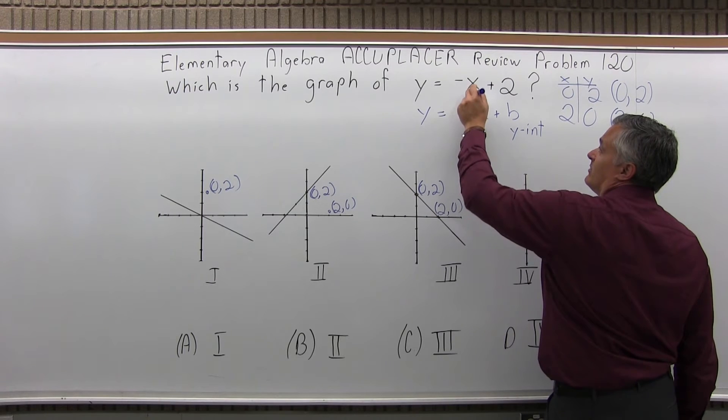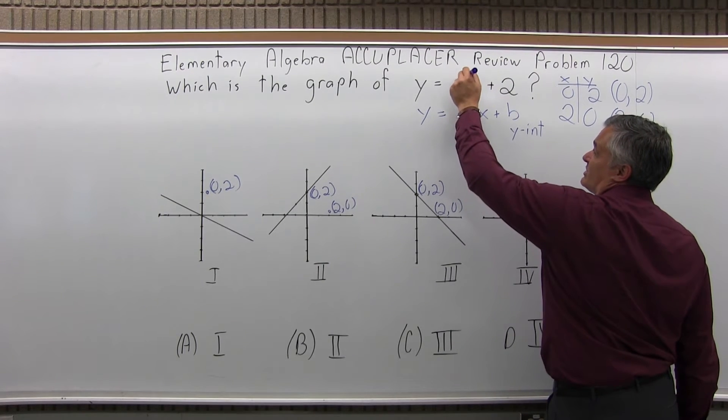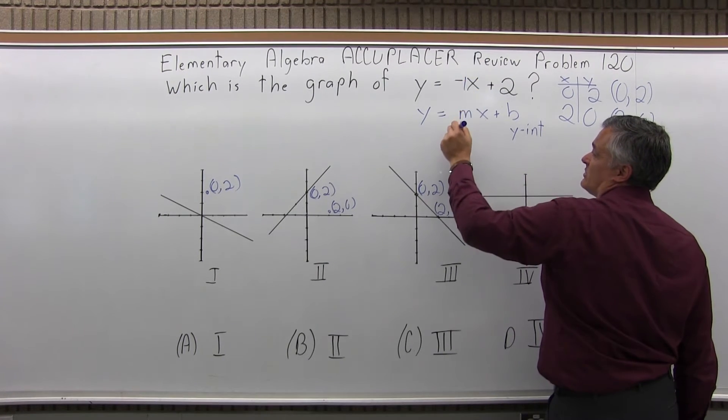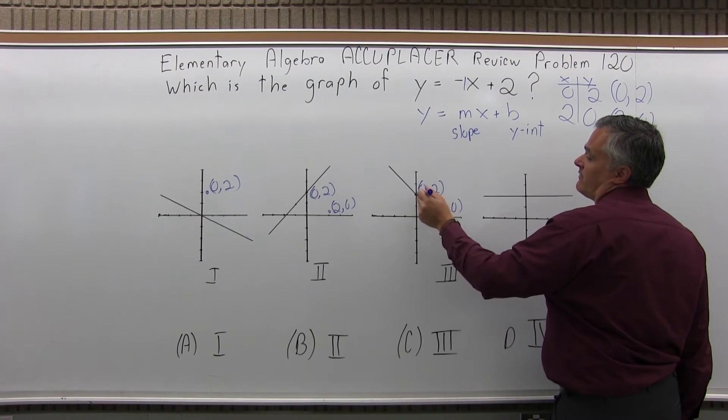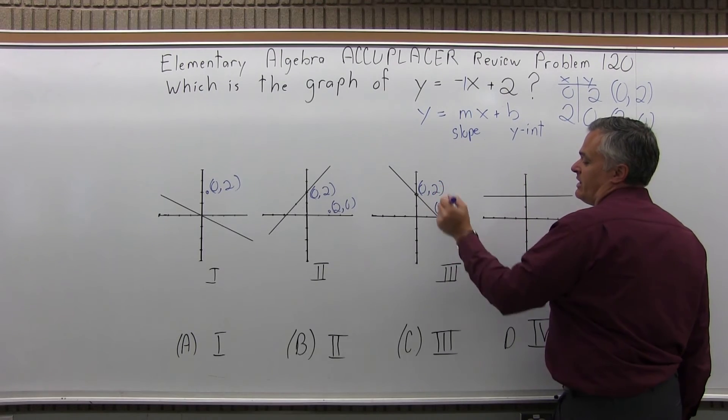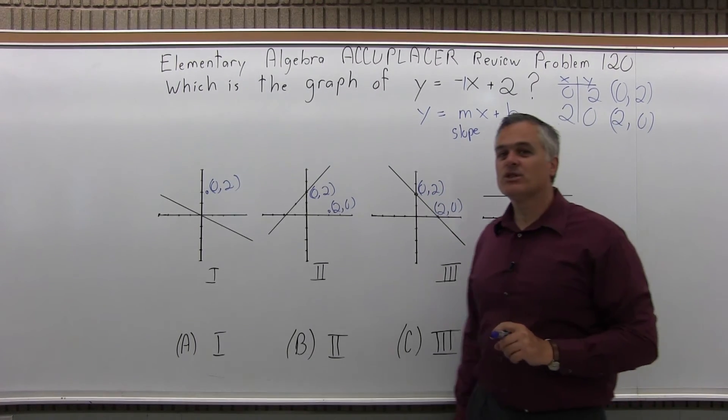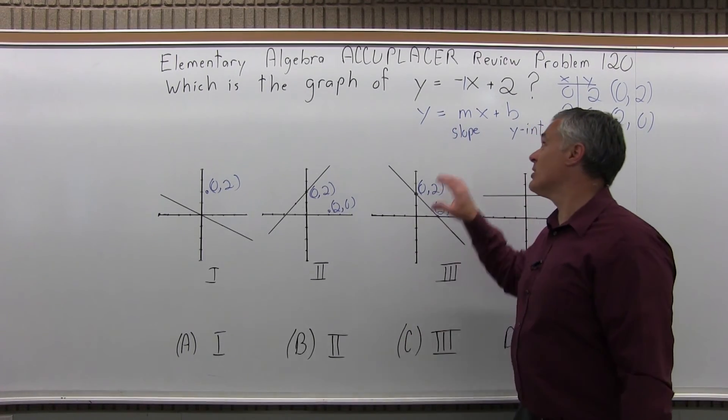But the m, the number in front of the x, which isn't written - it just says negative x, you can assume it's negative 1 - that's the slope. So here's your slope of negative 1. For every 1 you go over, you go down 1. So it gets you to the same answer. And it gets you there a little quicker if you remember the y equals mx plus b.